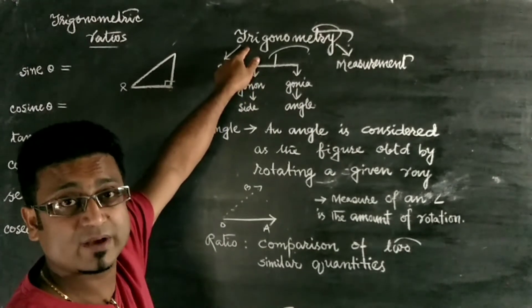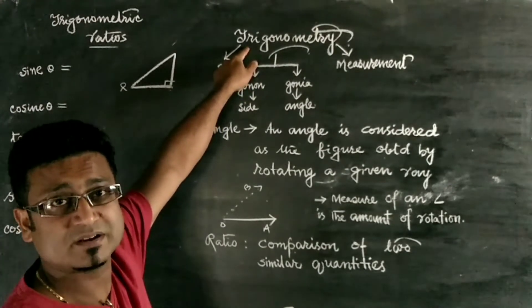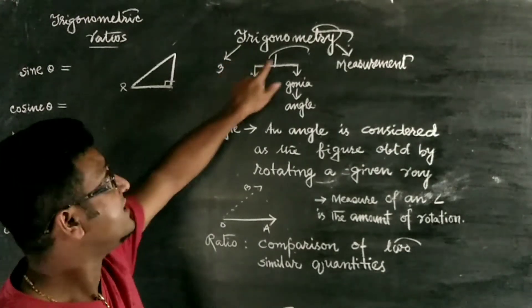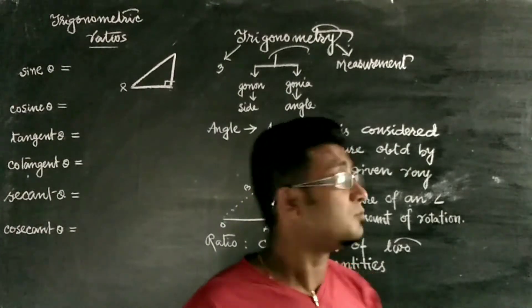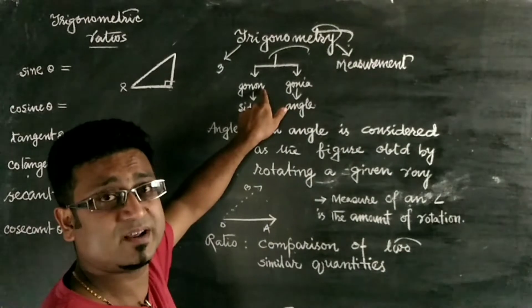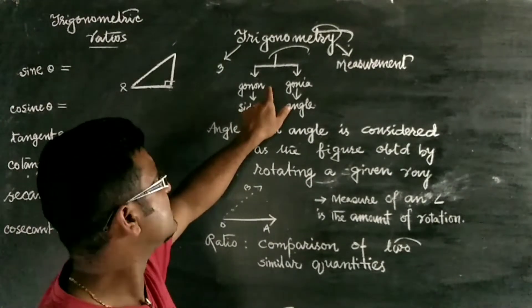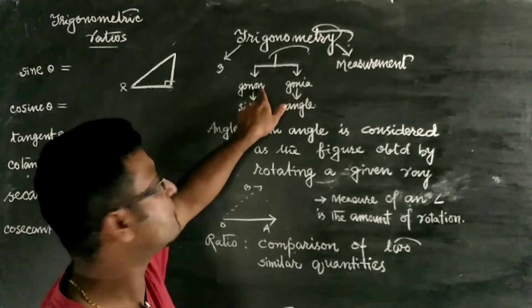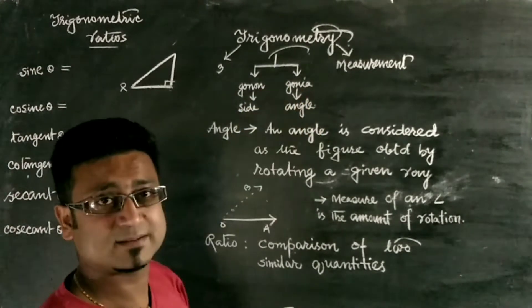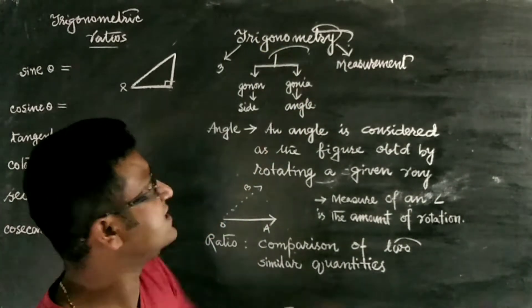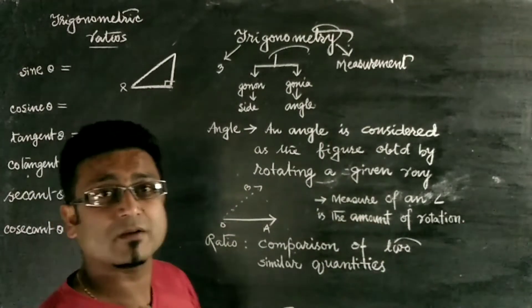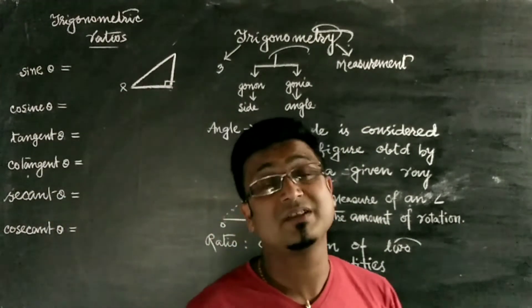You know 'tricycle' — tricycle means three wheels. 'Triangle' — that means 'tri' means three. The word 'gono' is derived from either 'gonon' or 'gonia' — some mathematicians say it comes from 'gonon' meaning side, and some say from 'gonia' meaning angle. The third part, 'metri', means measurement.